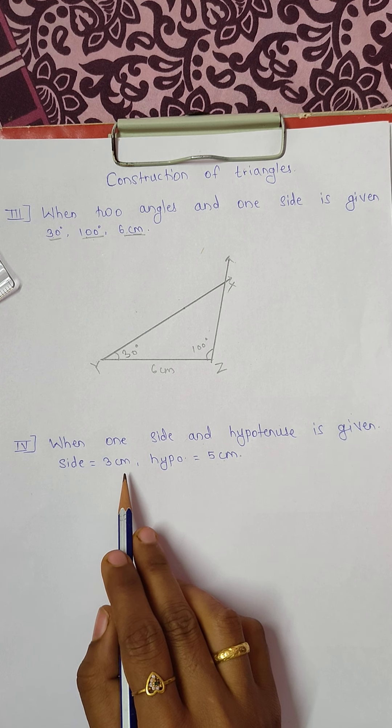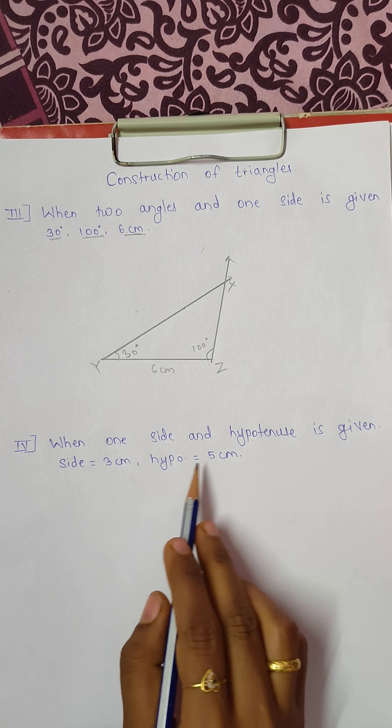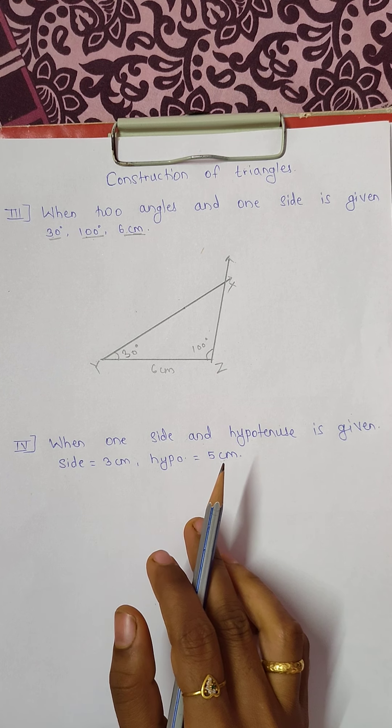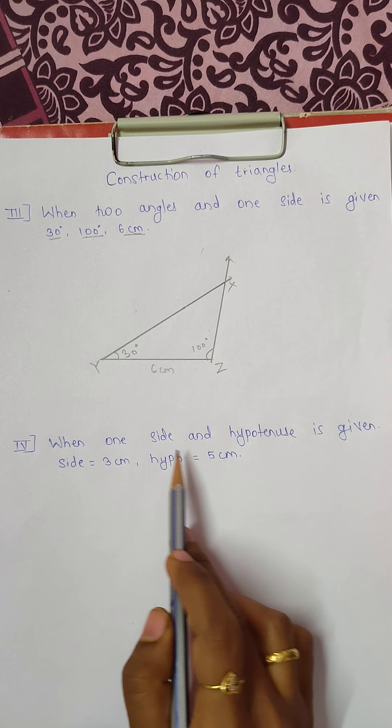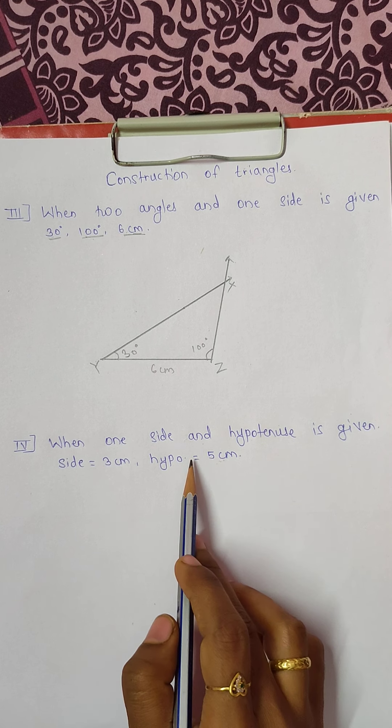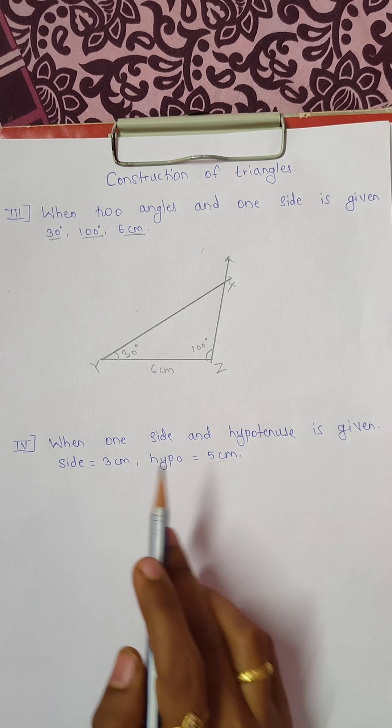Now why? Always remember that hypotenuse is always greater than the remaining two sides of the right angled triangle. So out of 3 and 5, 5 is the greater. So that is why hypotenuse is 5 and the side is 3.